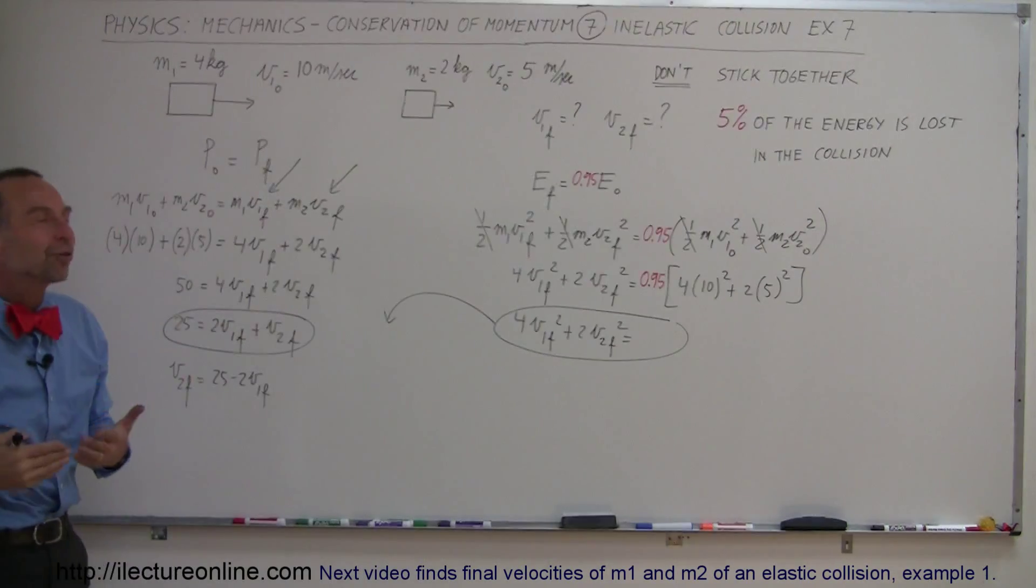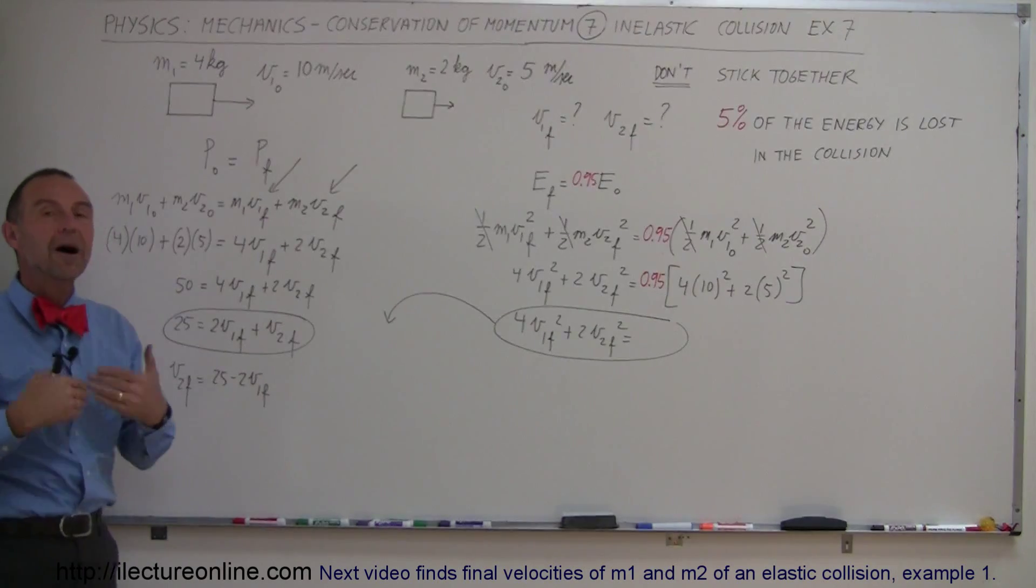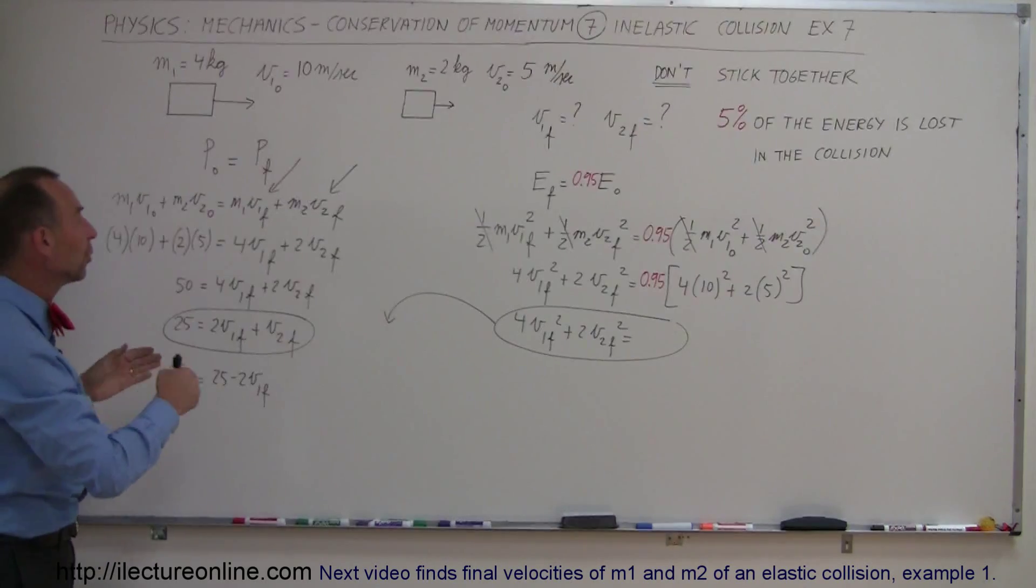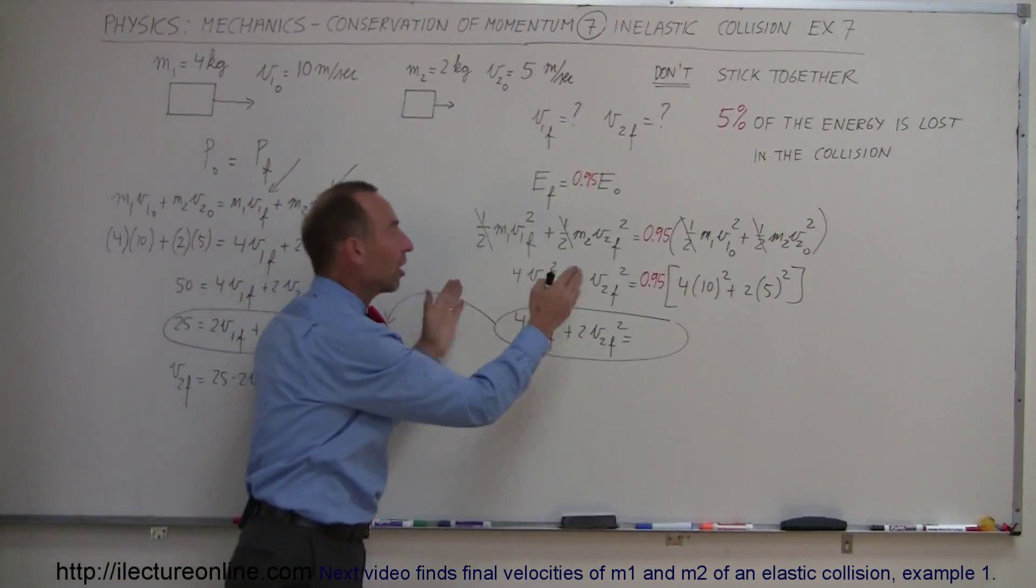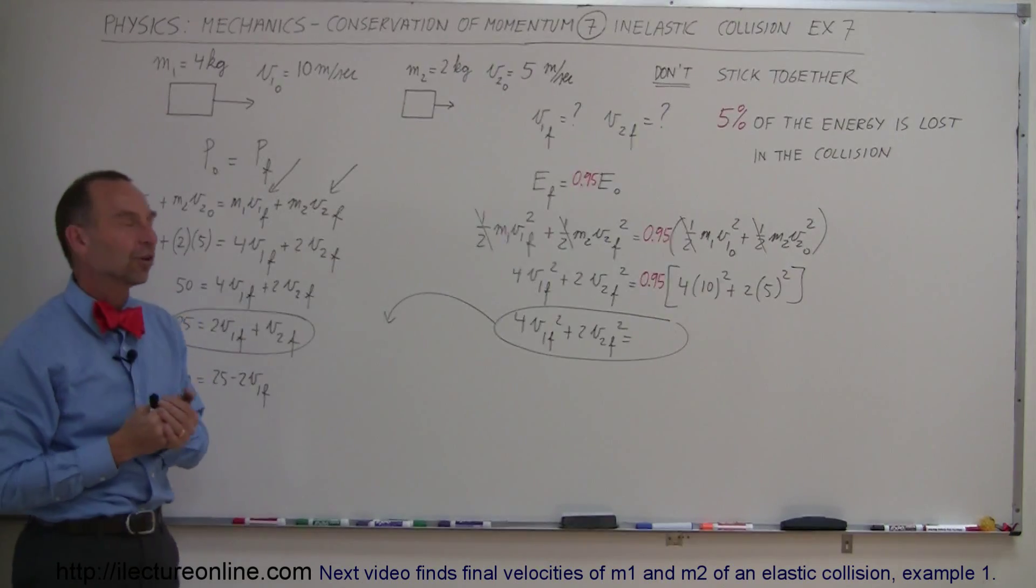But it turned out the numbers that I chose we could not find a correct answer. It was an impossible answer. In other words there was no possible way in which we could come up with final velocities that would both meet the conservation momentum requirements and the energy loss requirements that I put in. I had said that in the collision we lost half the original energy.